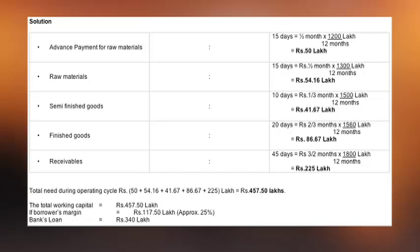Four hundred fifty-seven point five zero lakhs is the total working capital requirement of the unit, assessed under the operating cycle method. Now, one more assumption: a bank cannot give one hundred percent working capital. The bank insists that the promoter's contribution should be a minimum of twenty-five percent. So having worked out the total requirement at four hundred fifty-seven point five zero lakhs, the margin comes to twenty-five percent.